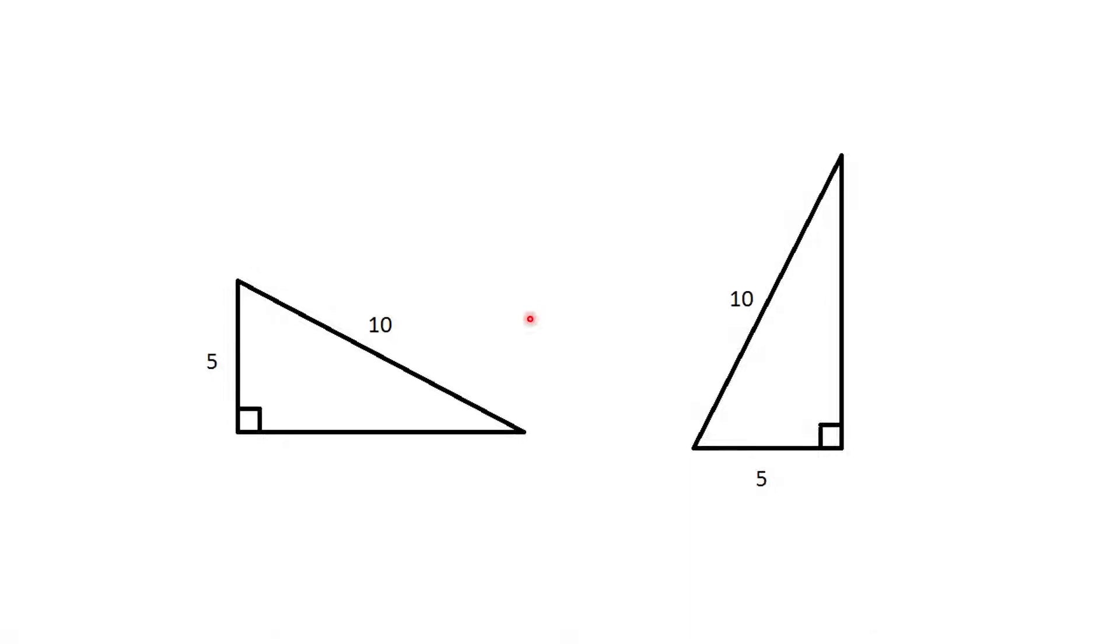So this one would be an RHS. They would be definitely congruent, because we have a right angle in each, equal hypotenuse, and equal other side.